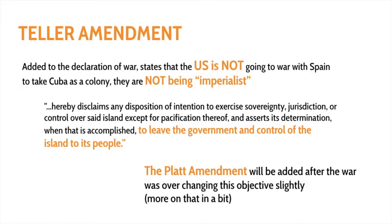There was one addition to the declaration of war called the Teller Amendment, which states that the United States is not going to war with Spain to take Cuba as a colony. As discussed in our lesson about Hawaii, a lot of Americans did not agree with imperialism — many believed it was against our national ideology to go out and annex and take control of other countries. President McKinley himself was an anti-imperialist, and this is one of the reasons why the Teller Amendment was passed.